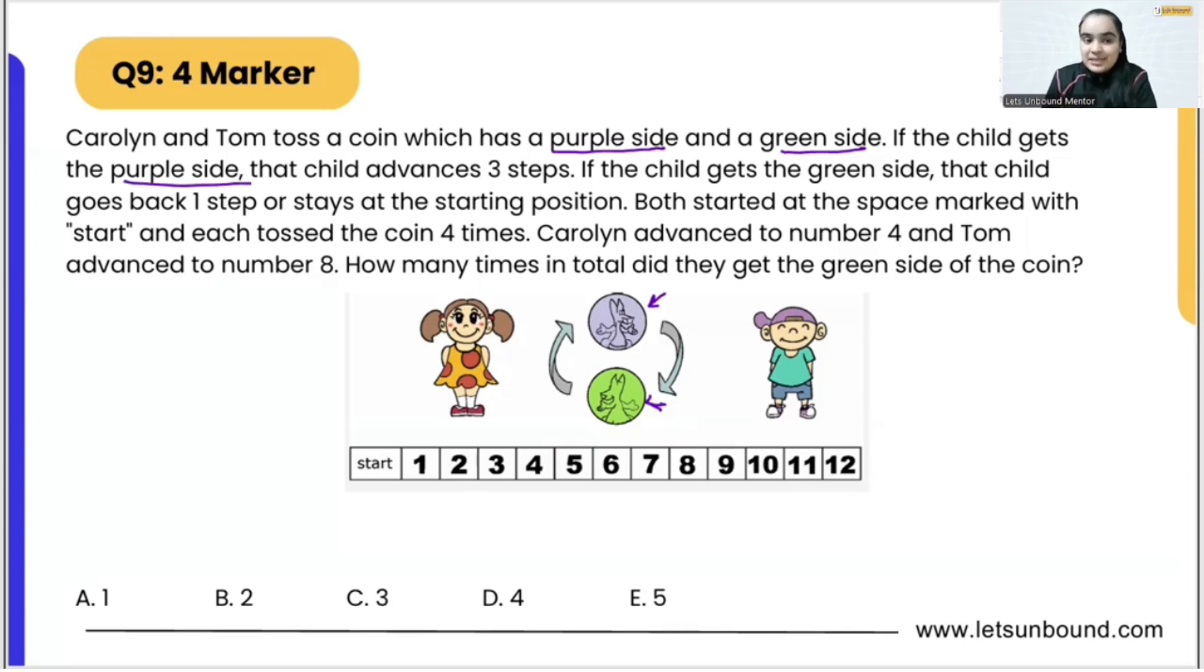If the child gets the purple side, that child advances three steps. That means if we are tossing a coin and we get a purple side, we can jump three steps forward.